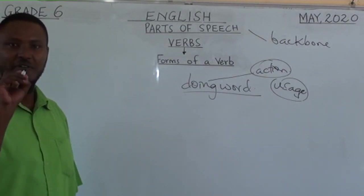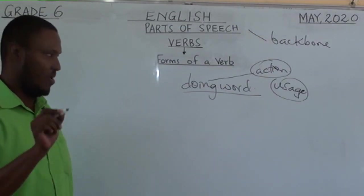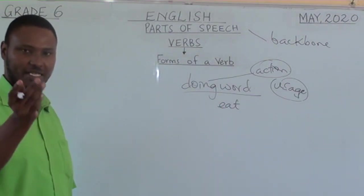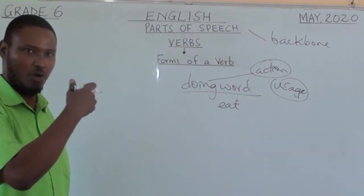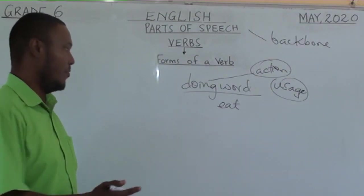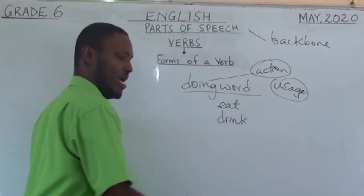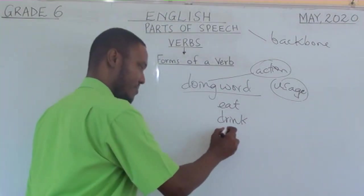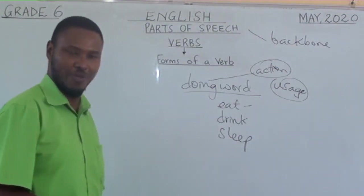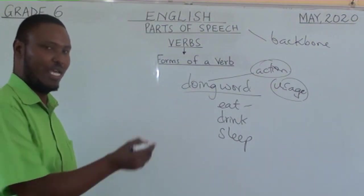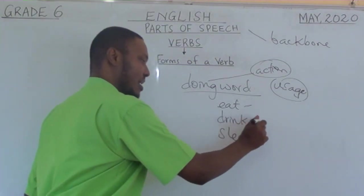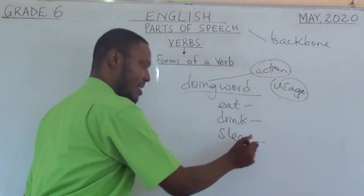Can you give me examples of verbs? We have eat — it's an action. Maybe some two or three minutes before we started this, you were eating something, munching on something. We have the word drink. We have the word sleep. These are actions. If someone tells you to do the action of eating, it's easy to show — you eat using your mouth and teeth. To drink and to sleep are also actions.